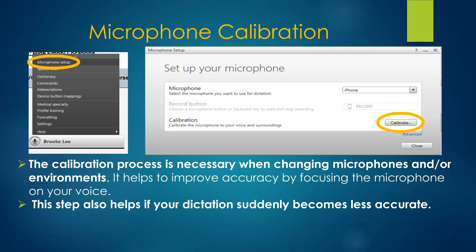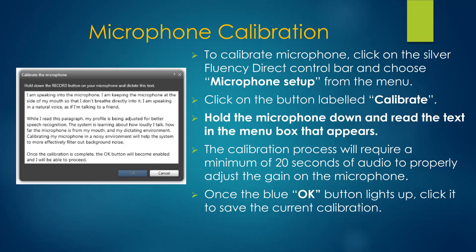Calibrating the microphone is the next step to set up your voice profile. The brief calibration process is necessary whenever you change microphones or environments. It is also useful to calibrate if you notice your dictation text is suddenly less accurate. Calibration helps to improve accuracy by distinguishing the sound of your voice from the ambient noise in the background environment. To begin calibration, simply click on the Calibrate button in the Set Up Your Microphone menu box.